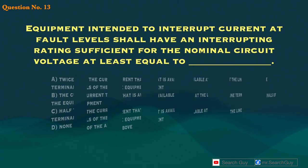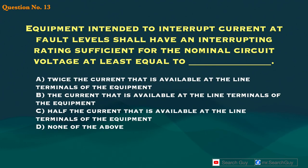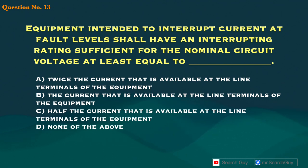Question 13. Equipment intended to interrupt current at fault levels shall have an interrupting rating sufficient for the nominal circuit voltage, at least equal to blank. A. Twice the current that is available at the line terminals of the equipment. B. The current that is available at the line terminals of the equipment. C. Half the current that is available at the line terminals of the equipment. D. None of the above.